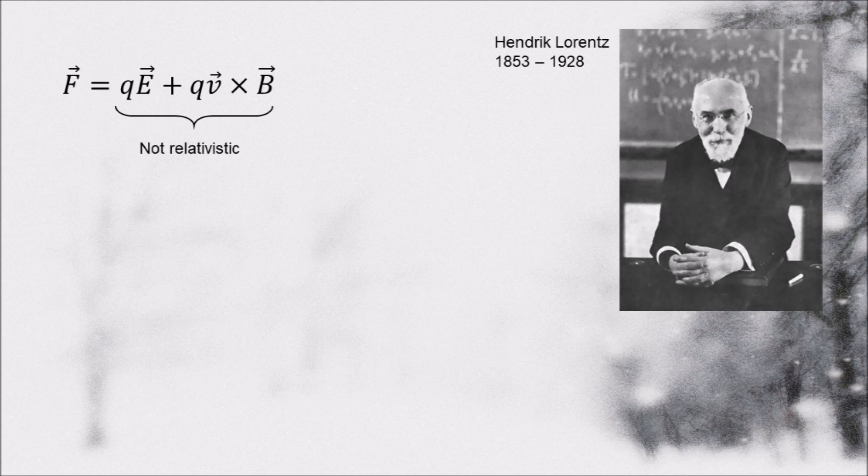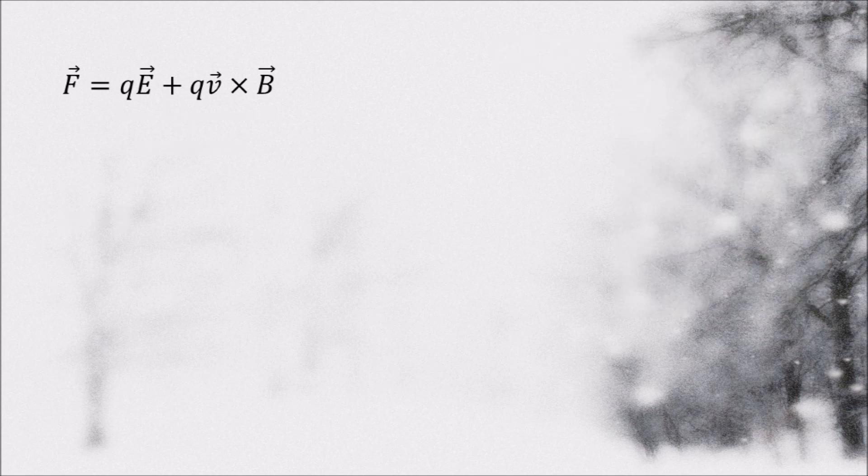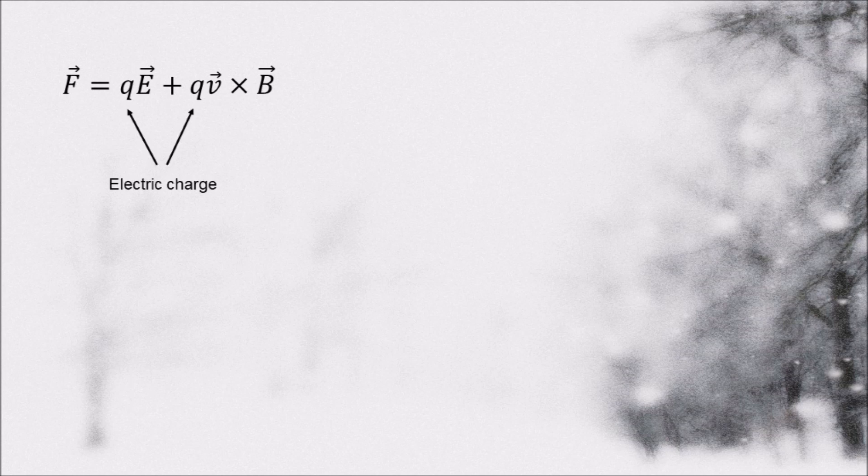Everything that follows will be done in the units where the speed of light is 1. Before we get on with this task, we should identify all the terms. So Q is the electric charge. For simplicity let's just assume we're talking about an electron which has a negative charge.